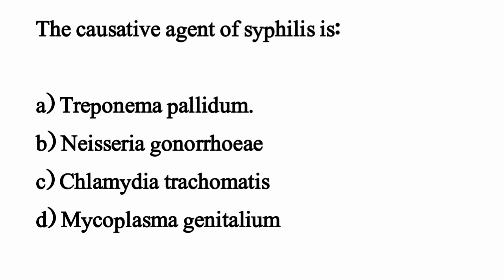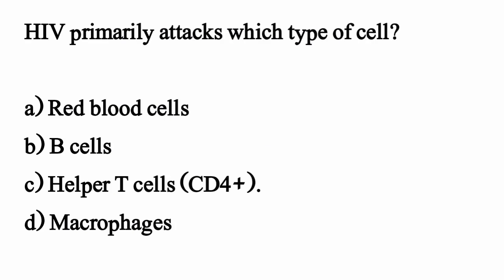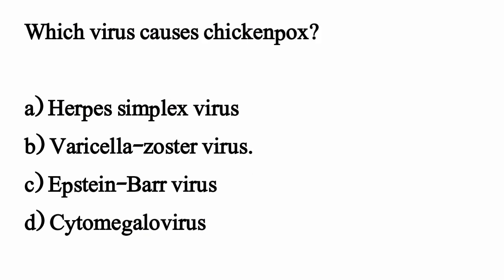The causative agent of syphilis is — the correct option is option A: Treponema pallidum. HIV primarily attacks which type of cell? The correct option is option C: helper T cells, CD4+. Which virus causes chickenpox? The correct option is option B: varicella-zoster virus.